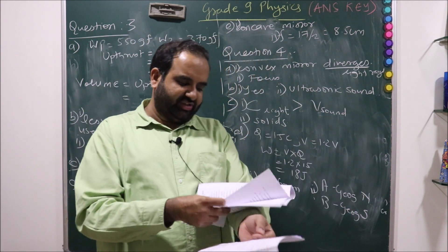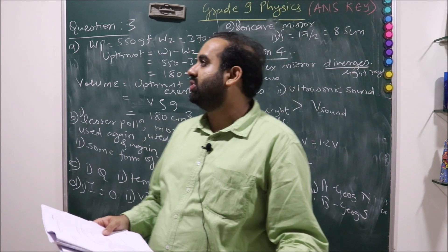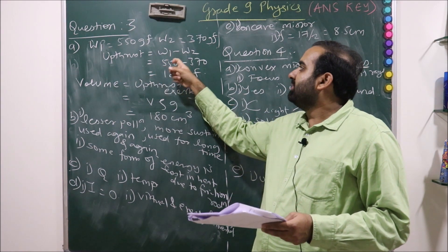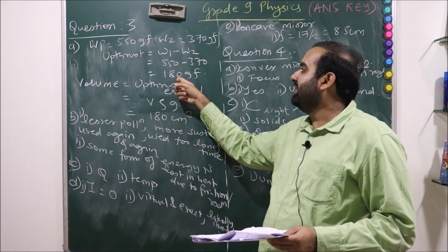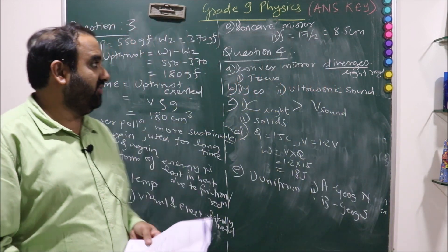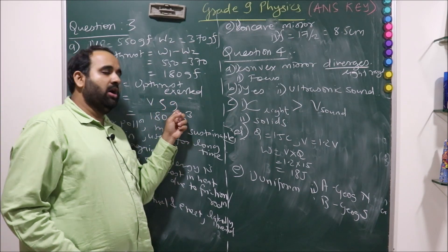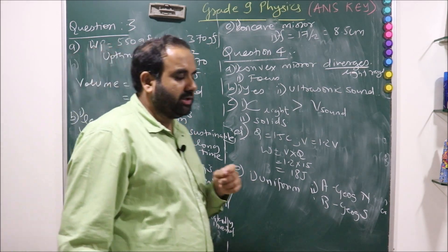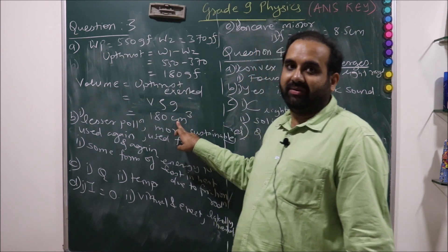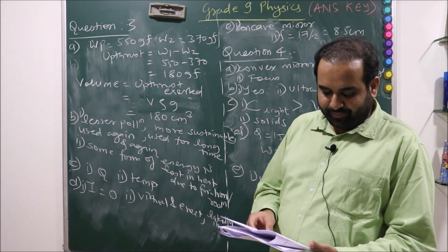A body weighs 550 gf in air and 370 gf in water when it is completely immersed in water. Find out upthrust. Very simple formula: W1 and W2 is given. Upthrust will be equal to W1 minus W2, that is 550 minus 370, 180 gf is the answer. The volume of the body is nothing but the upthrust exerted on the object, so that is V rho g. Here it will be 180 centimeter cube only. Since all of them are in CGS, you can keep it in CGS, 180 centimeter cube.